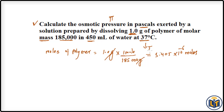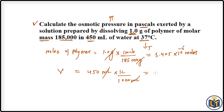Next, we convert the volume into liters, because molarity is expressed as moles per liter of solution. We have 450 ml, and since 1 liter equals 1000 ml, the ml units cancel out, giving us 0.450 liters. Now we can apply the molarity formula.